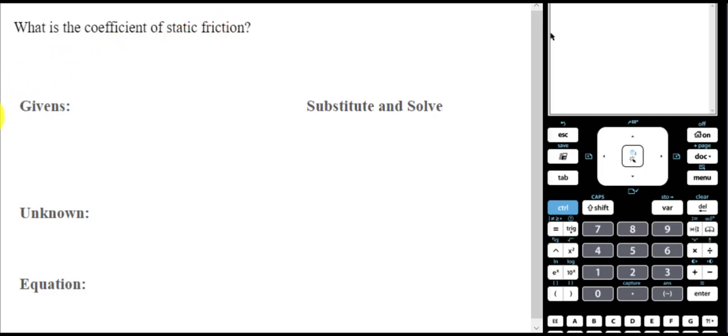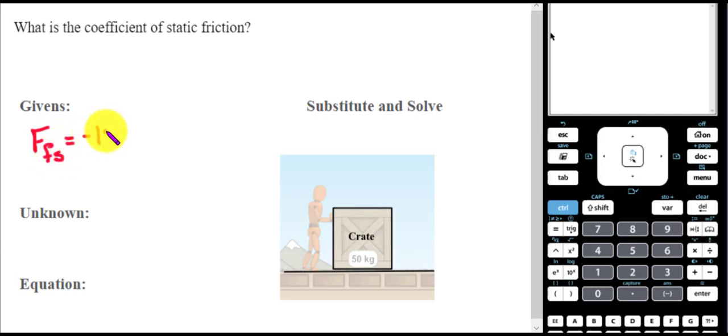So what is the coefficient of static friction, which relates to the question before? I am given a crate that has 50 kilograms, and I found in the question before that the force of friction static was negative 126 newtons. Because I kept pushing with a force applied until I found the crate just began to move at 126 newtons, so therefore the force of friction static is negative 126 newtons.